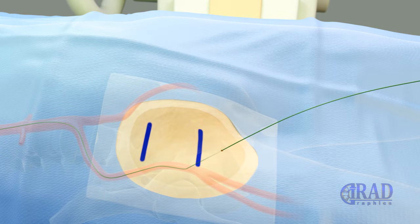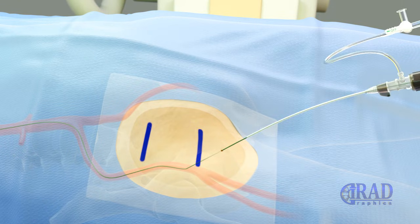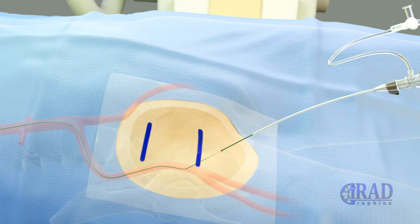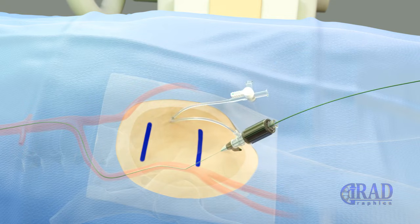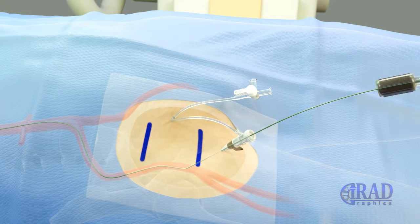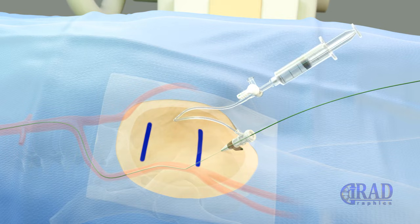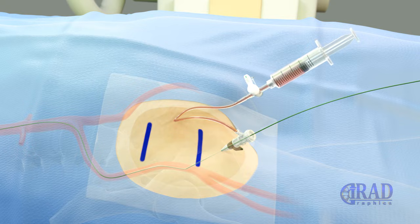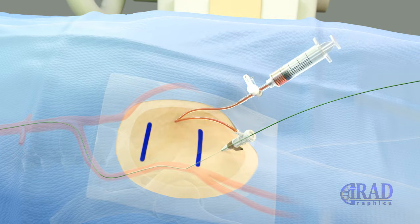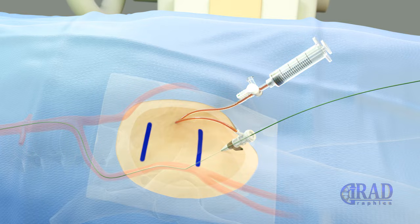Then, the outer layer of the transitional sheath is exchanged for a vascular sheath, and the dilator of the vascular sheath is removed. At this point, the sheath is aspirated and flushed with heparinized normal saline. Contrast may be injected to assess the patency of the common femoral artery and safety of the access.